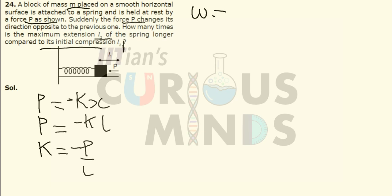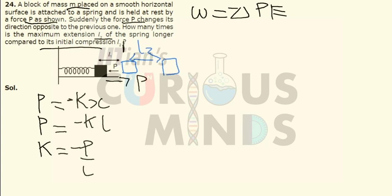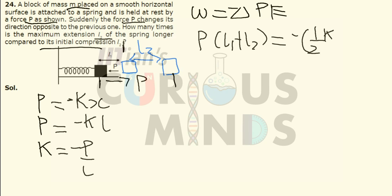Now the work done equals the negative of the change in potential energy. When the same force P is applied in the opposite direction, the mass moves from the original equilibrium position to a new point where the extension is l2. The displacement from point A to point B is l1 plus l2, so work done equals force times displacement equals P times (l1 plus l2).